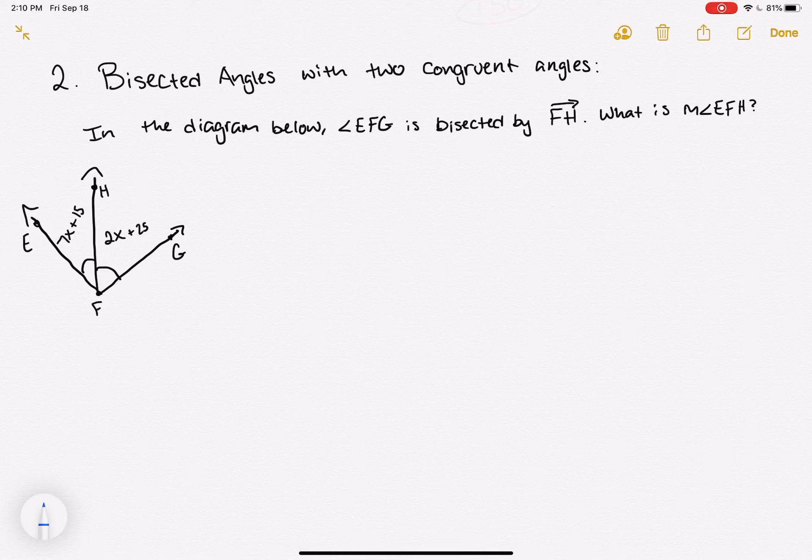Here we have an example with bisected angles where when you bisect an angle you have two congruent pieces. In the question it says, in the diagram below, angle EFG is bisected by ray FH. What is the measure of angle EFH?